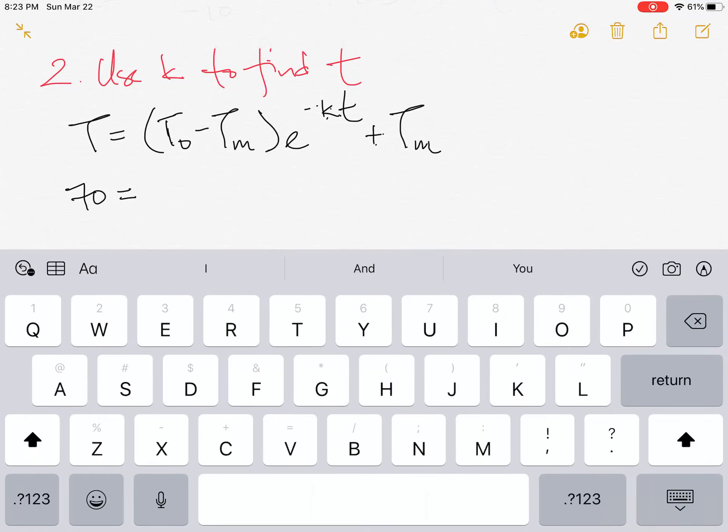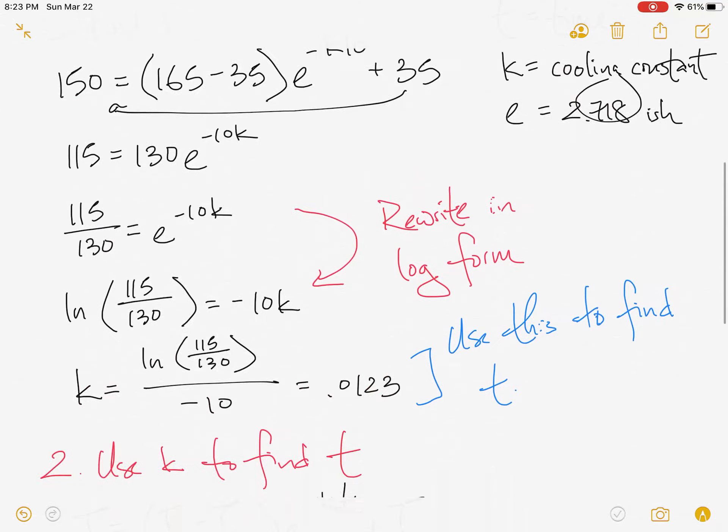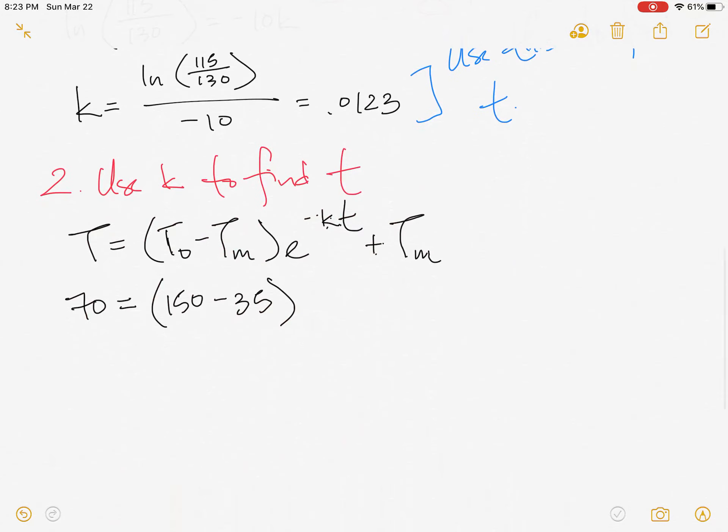And since we're seeing how much longer it's going to take, we want to go from the time it was 150, and then our surrounding temperature or medium temperature is still 35, e to the negative 0.0123t plus 35.